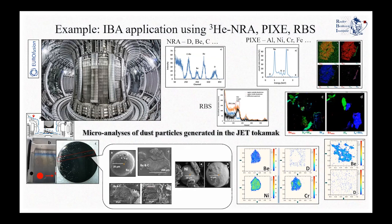Ion beam analytical techniques combined with a scanning microbeam offer the nice possibility to take information about all elements — from the lightest elements like deuterium to the heaviest like tungsten — and this can be achieved using a helium-3 beam. With helium-3, we can probe light elements through nuclear reactions, collecting spectra from an NRA detector of mostly proton particles emitted from helium-3 reactions on deuterium. You can see the peaks obtained from a surface barrier detector — protons emitted from different reactions at the high energy part of the spectrum, which is background-free.